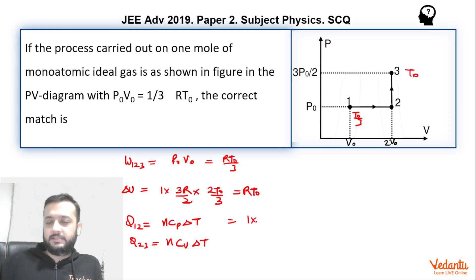n is 1. Cp will be 5R by 2. And delta T here, you can see the pressure remains constant, volume becomes twice. Hence temperature would have become twice. 2T0 by 3 temperature would have become. So we can say that delta T is T0 by 3. And here n is 1, Cv is 3R by 2.